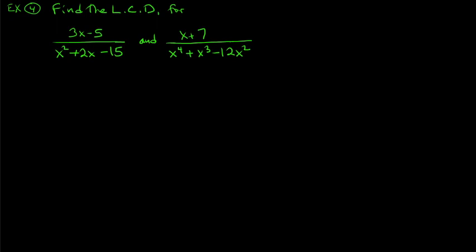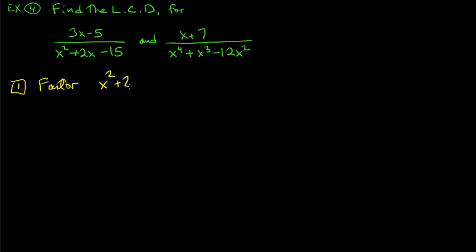Example four: find the LCD for (3x−5) over (x squared + 2x − 15) and (x+7) over (x to the fourth + x cubed − 12x squared). Step one, we have to factor both denominators — this has nothing to do with the numerators. Factor x squared + 2x − 15: we need two numbers that multiply to −15 and add to +2.